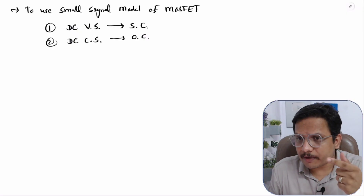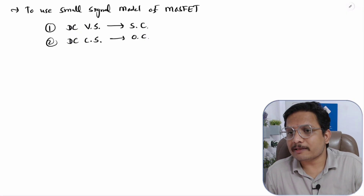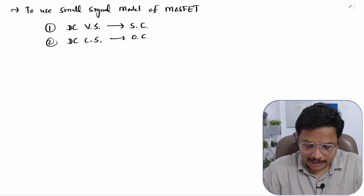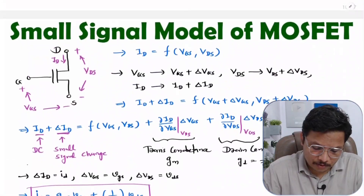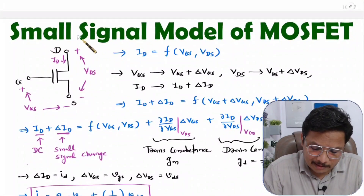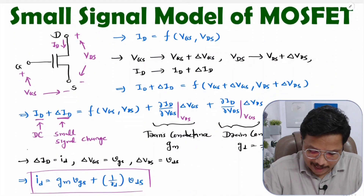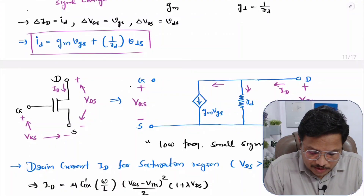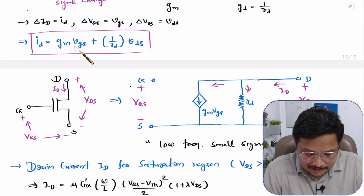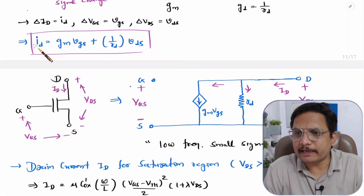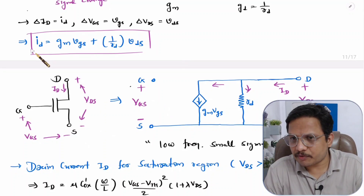In my last video, I explained small signal analysis, in which I explained the small signal model of MOSFET — specifically, how changing parameters like VGS and VDS affects the drain current.